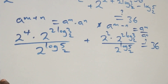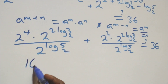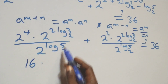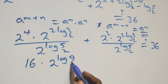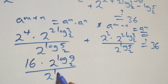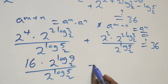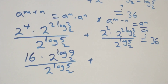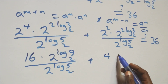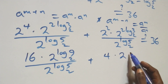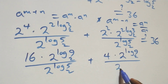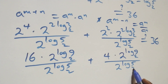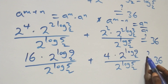2 raised to power 2 multiplied by itself 4 times is 16. We reverse the exponents: 2^(log₂3²) equals 9, and 2^(log₂5) equals 5. So we have 16 times 9 over 5, plus 4 times 9 over 5, equals 36.